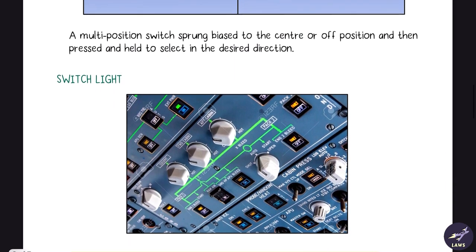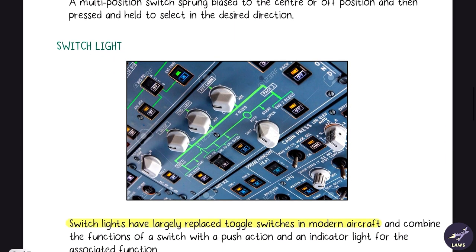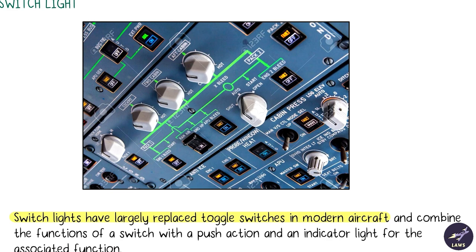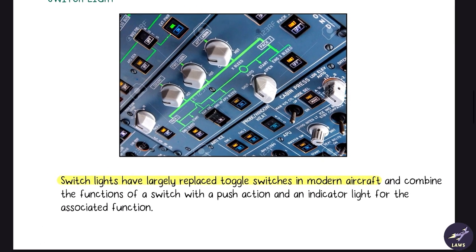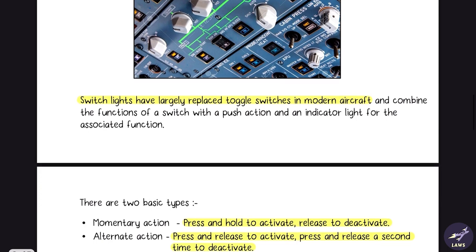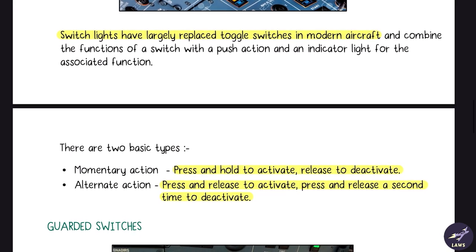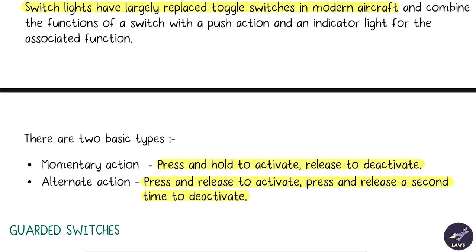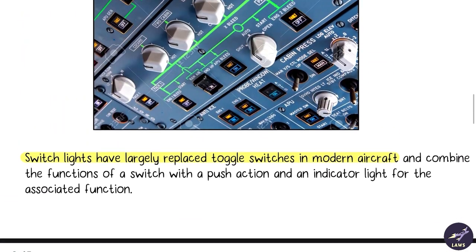Then we have switch lights. Switch lights have largely replaced toggle switches in modern aircraft. There are two basic types: momentary action, which is press and hold to activate and when you release it it deactivates, and alternate action - press and release to activate, then press and release again to deactivate.